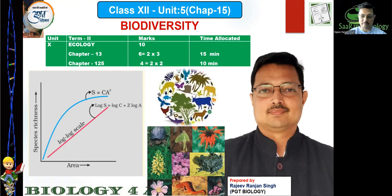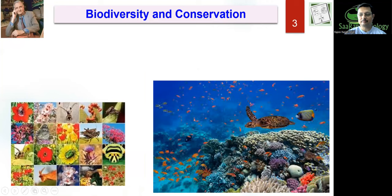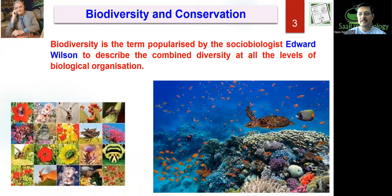Let's begin our journey on biodiversity. As far as the word biodiversity is concerned, it basically describes the combined diversity in the biological organization — the variation in the forms and features of organisms around us. That gives diversity, and diversity when counted all through is called biological diversity. This term was popularized by Sir Edward Wilson, a sociobiologist.